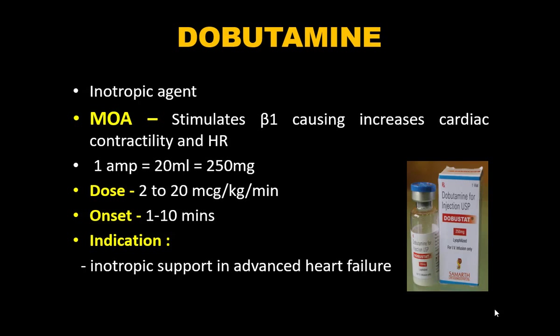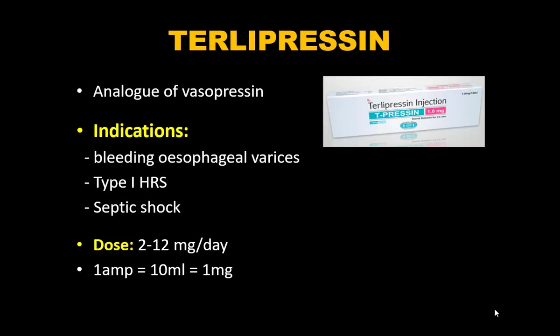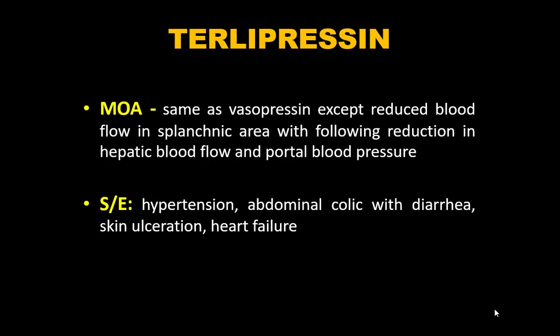Terlipressin is a vasopressin analog. Indications: bleeding esophageal varices, type 1 hepatorenal syndrome, and septic shock. Dose: 2–12 mg/day, typically prescribed as 1 mg every 4 hours, increasable to 2–3 mg every 4 hours. One ampoule contains 10 mL = 1 mg. Mechanism same as vasopressin but also reduces splanchnic blood flow, reducing hepatic blood flow and portal pressure. Side effects: hypertension, abdominal colic with diarrhea, skin ulceration, and heart failure.